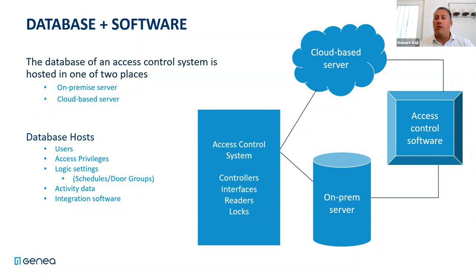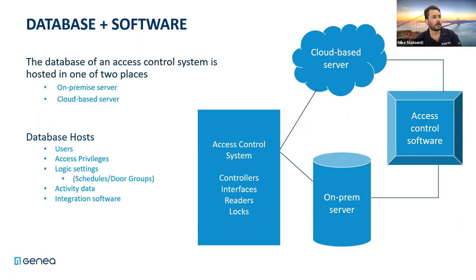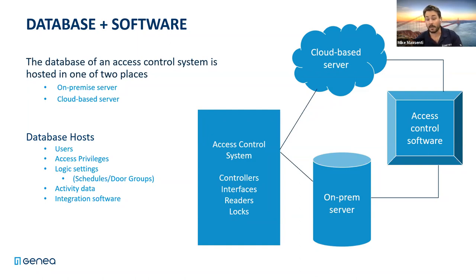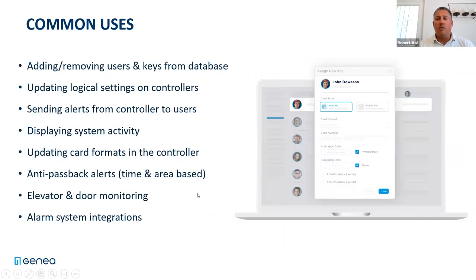Another question: what about if there's just a power outage in the building - what does the system default to? It defaults to a locked state. If you don't have adequate battery backup we always recommend our customers install a UPS or a system of batteries. At least then you have 12 to 24 hours of battery life depending on how big your UPS is and what kind of locks you have. If you're on the fence, just spend the extra $500, because there's going to be a day you'll wish you did. We always recommend you spec it into your system.